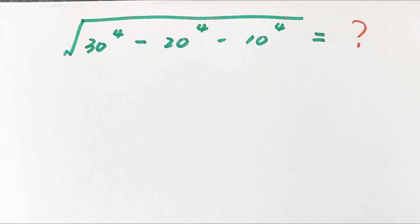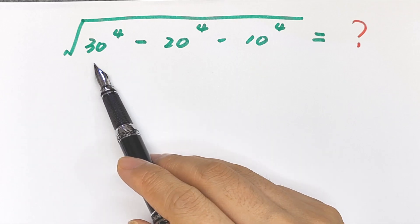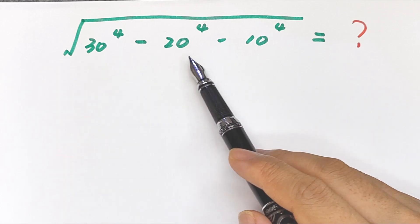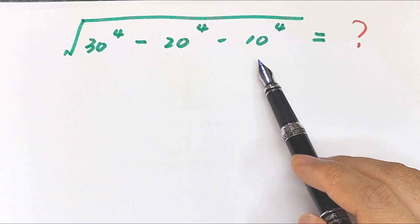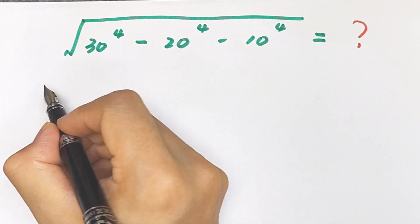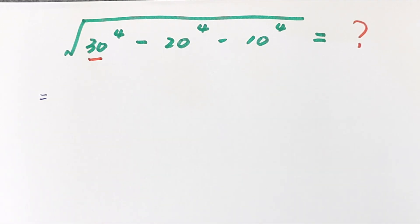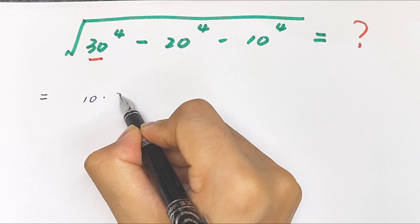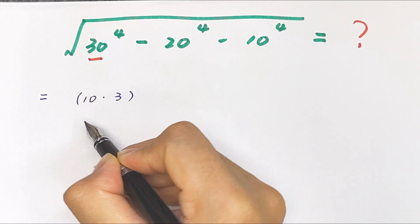Hello everyone, welcome to Math4U. How to solve: square root of 30 to the power of 4 minus 20 to the power of 4 minus 10 to the power of 4 equals.